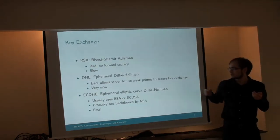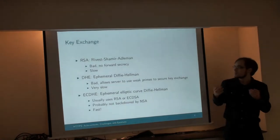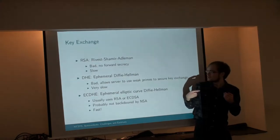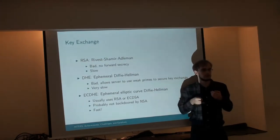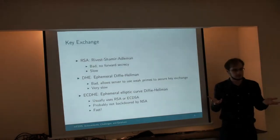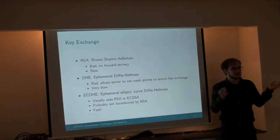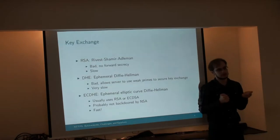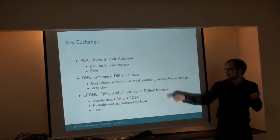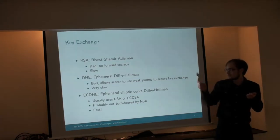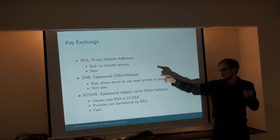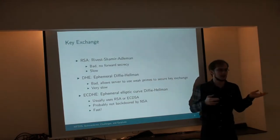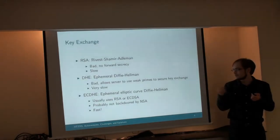There are three different basic protocols used for key exchange in TLS. RSA key exchange is the most common by far, but it's also bad because it doesn't provide forward secrecy. If an attacker gets the private key from the server, the attacker can go back in time — they've probably recorded all previous encrypted conversations and can use the private key to decrypt them. With Diffie-Hellman, that's not possible. The attacker cannot go back in time; they can only compromise future connections. So that's a desirable security property.